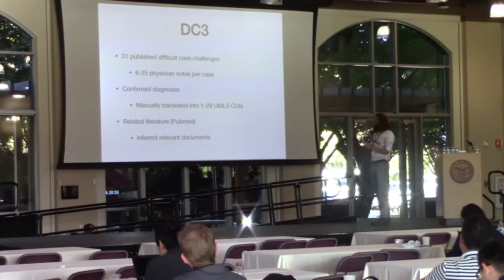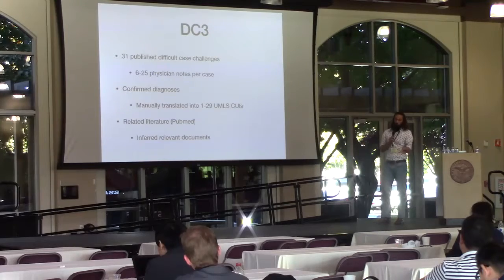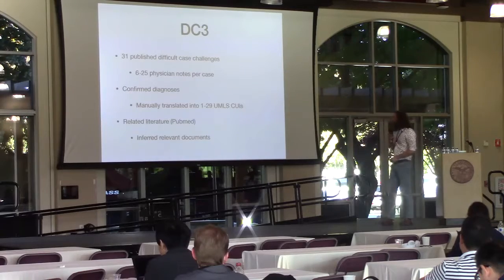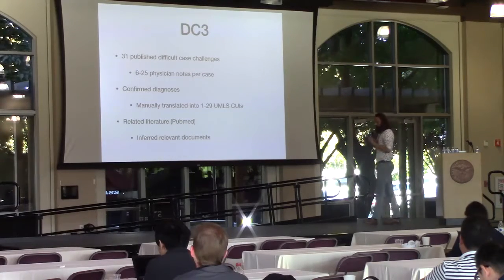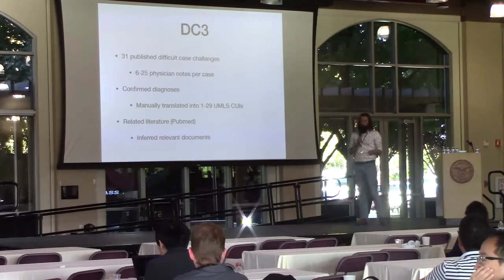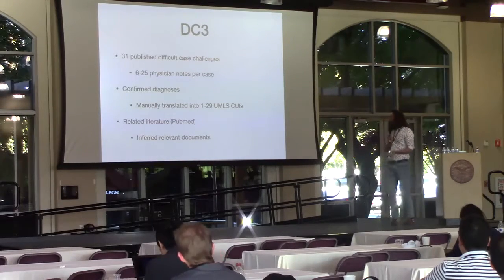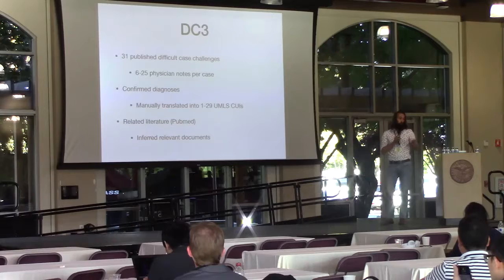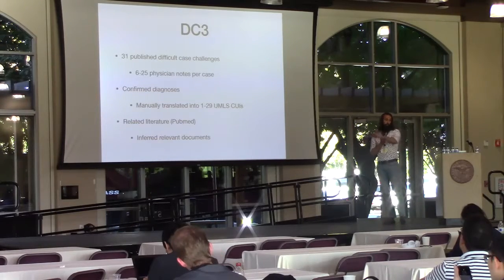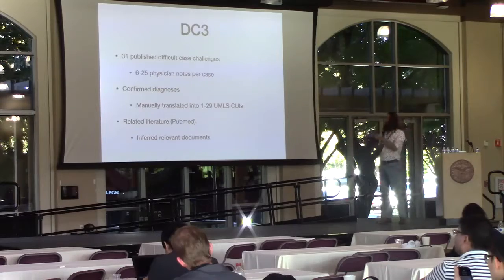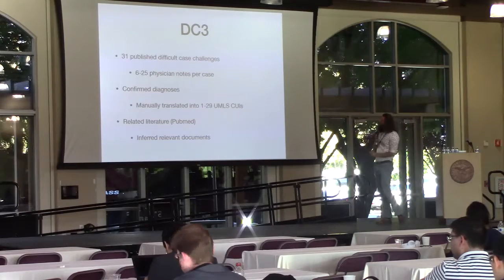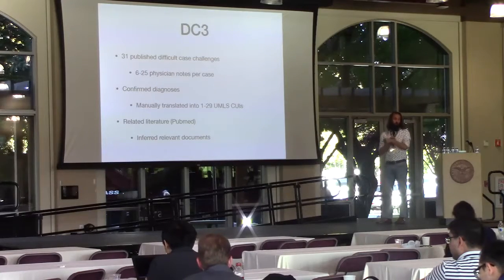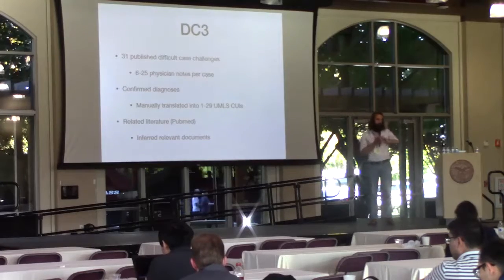Each case is complex — each has between six and 25 notes, representing terms in which physicians run tests and report results. For each case, we have the eventual confirmed diagnosis, so we know for sure what the patient actually had. We had a physician manually encode UMLS concept IDs for all of these diagnoses. Many cases have more than one diagnosis: the simplest case has one diagnosis, and one complex case has 29 correct diagnoses that together constitute a rather complex patient presentation.